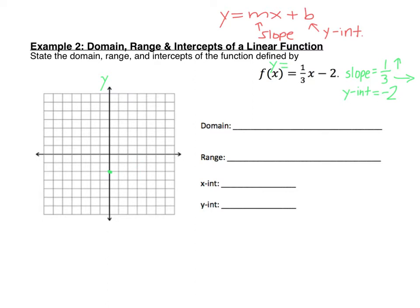Make a dot right there. I like to get a few dots, so I'm going to continue going up 1 over 3. Then once I'm out of space going up 1 right 3, to get the other half of the line, we can go down 1 left 3. I like to draw as many points as possible, especially here where we need to find the intercepts. It's really important that you sketch the graph yourself carefully. I went ahead and connected those with a straight line.